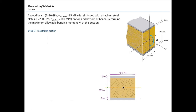A wood beam with a modulus of elasticity of 20 GPa and an allowable stress of 15 MPa is reinforced with attached steel plates. The steel plate has a modulus of elasticity of 200 GPa and an allowable stress of 160 MPa. There are two plates on top and on the bottom. We want to determine what would be the maximum allowable bending moment in this section.